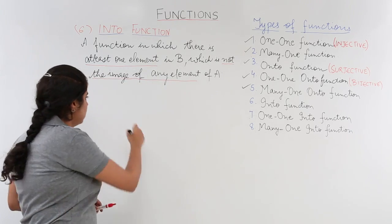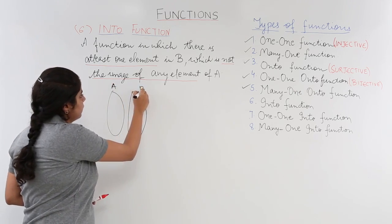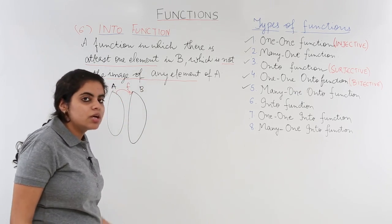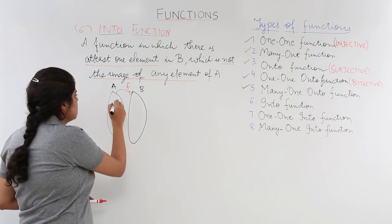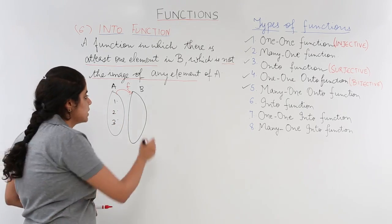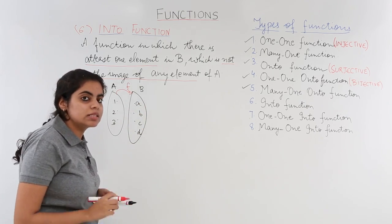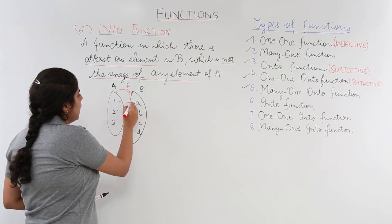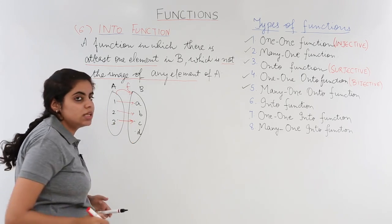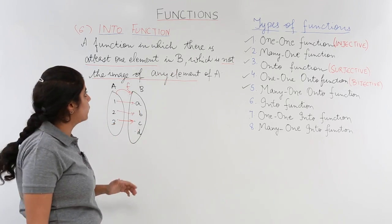Let's see it with the help of an example. Suppose I have two sets A and B and there is a mapping from A to B as f. Suppose there are some elements enlisted as 1, 2, 3 in set A, and here in set B we also have some elements enlisted as a, b, c, d. Now suppose a mapping is given such that 1 is related to a, 2 is related to b, 3 is related to c, while d is left unrelated.